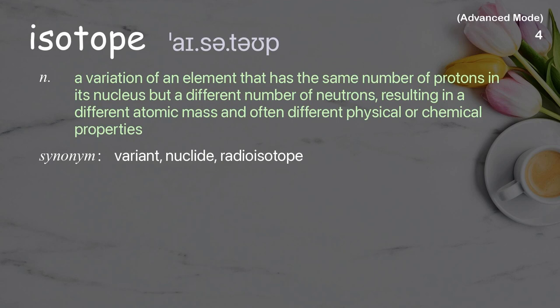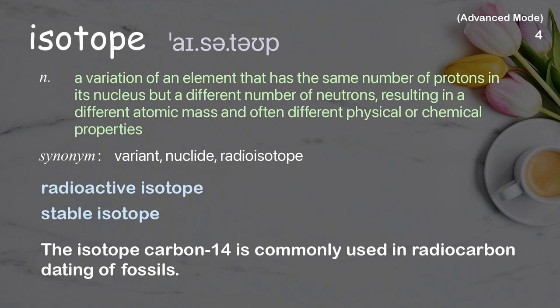Isotope: A variation of an element that has the same number of protons in its nucleus, but a different number of neutrons, resulting in a different atomic mass and often different physical or chemical properties. Examples: Radioactive isotope, stable isotope. The isotope carbon-14 is commonly used in radiocarbon dating of fossils.